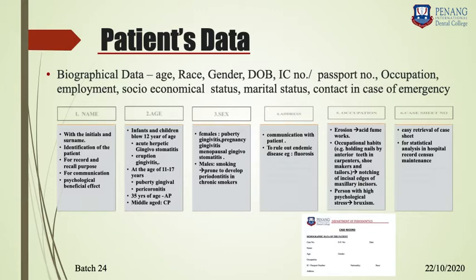At the clinic, first ask for the patient's name and cross-check it with their patient card to confirm it is the same person, then start taking the case sheet. Record the patient's name, age, sex, address, occupation, case sheet number, and IC number — all these are important while taking a case sheet.